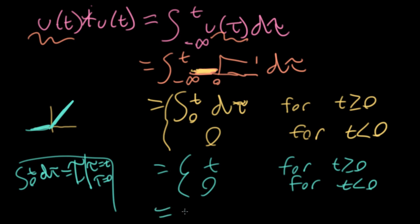Then I'll look at this and go, oh well, there's an easier way to write this. Let me write this as t u(t). So this is a ramp function. That's what I get when convolving a u with a u.